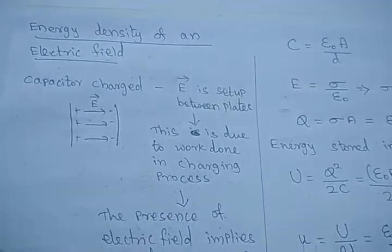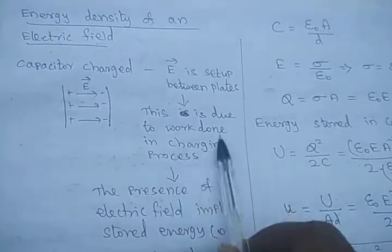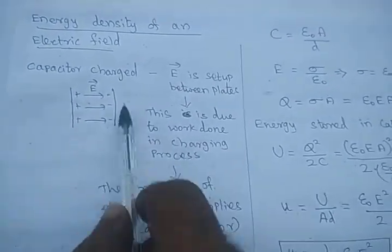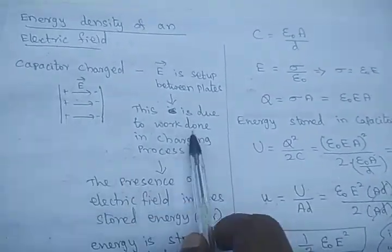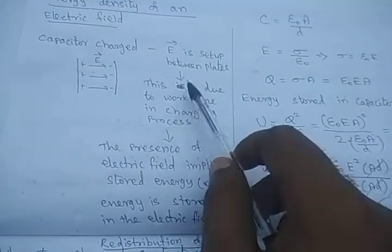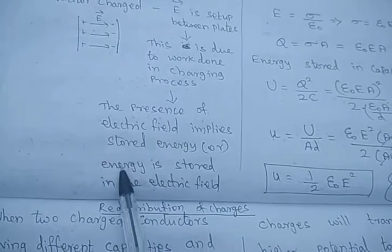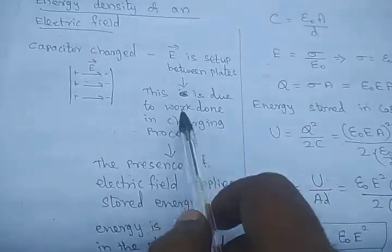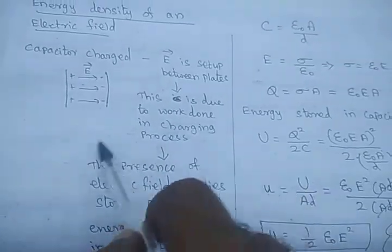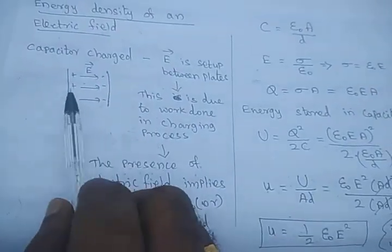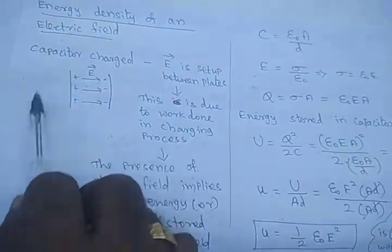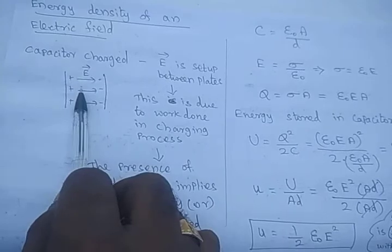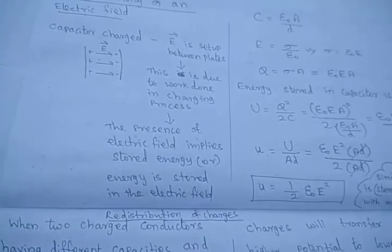So, from positive plate to negative plate. This is due to the work done in the charging process. When the capacitor is connected to a voltage, the charges are stored in the capacitor one by one. That work done is represented as energy stored in the electric field. When the capacitor is charged, work has to be done to store the charges, and whenever charges are stored, there must be an electric field. That is why we say that the energy is stored in the electric field.